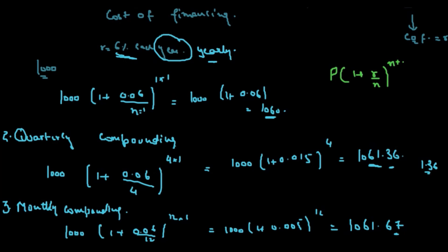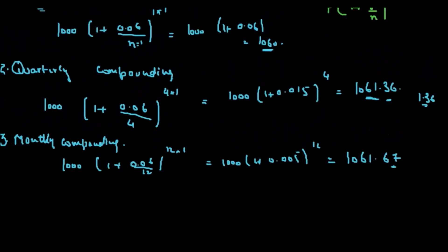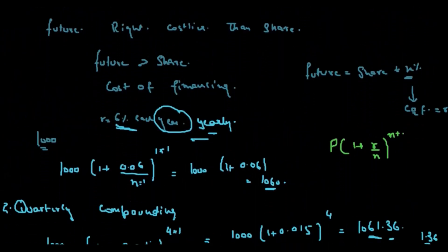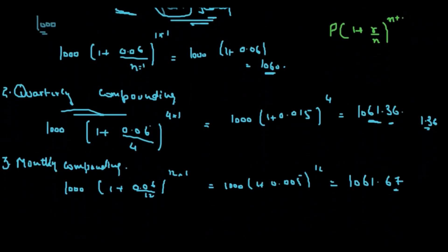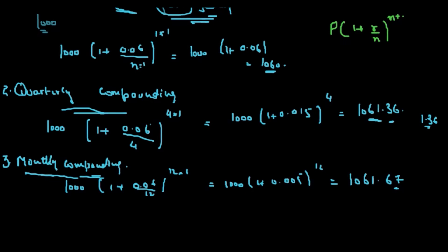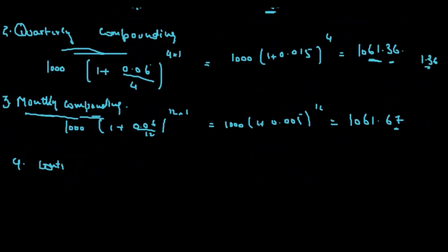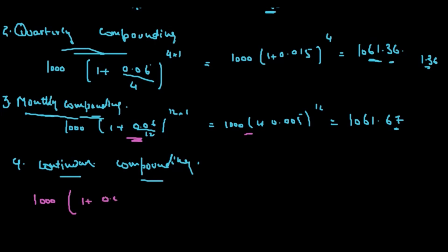In another scenario, the investor is happy with neither yearly, quarterly, nor monthly compounding — he would ask for continuous compounding. We need to understand how to calculate continuous compounding. Using the formula, it would be 1000 × (1 + 0.06/∞)^(∞×1), which represents our continuous compounding formula.